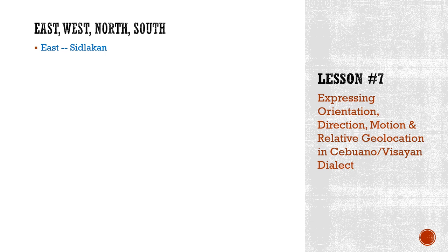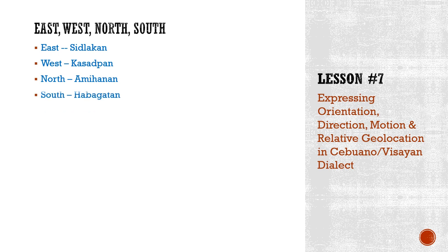We almost forgot — we have the cardinal directions: east, west, north, south. These are basic translations. If you are a traveler asking for specific directions, you can just say east, west, north, and south — that's easier.